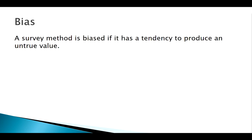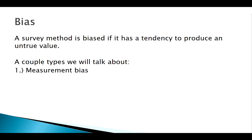A representative sample minimizes bias. In survey sampling methodology, we might define bias as just producing an untrue value — something that's leading us in the wrong direction. The two types we'll talk about are measurement bias and sampling bias.